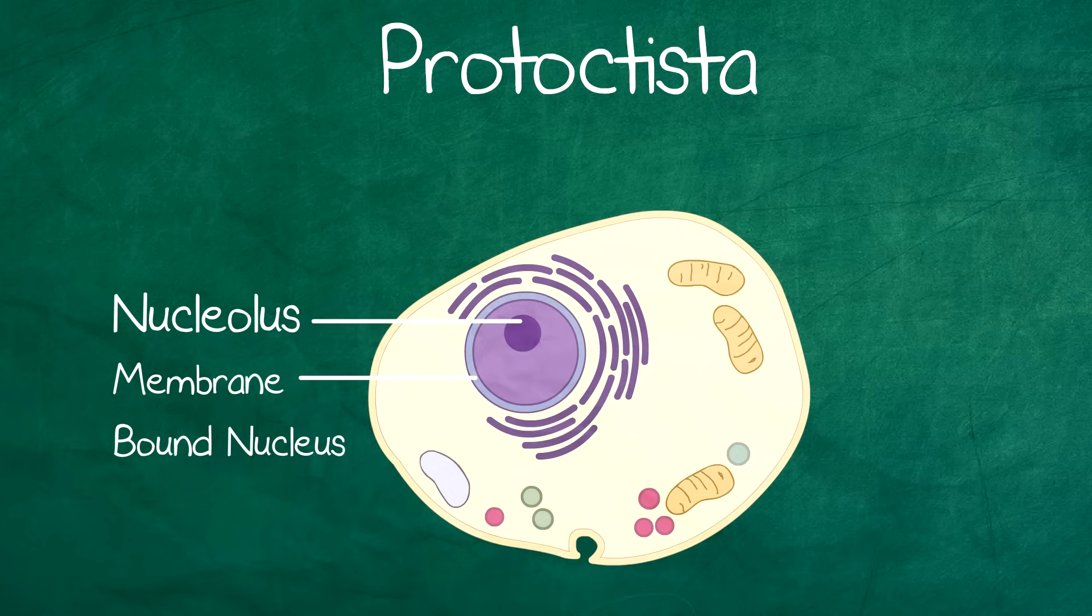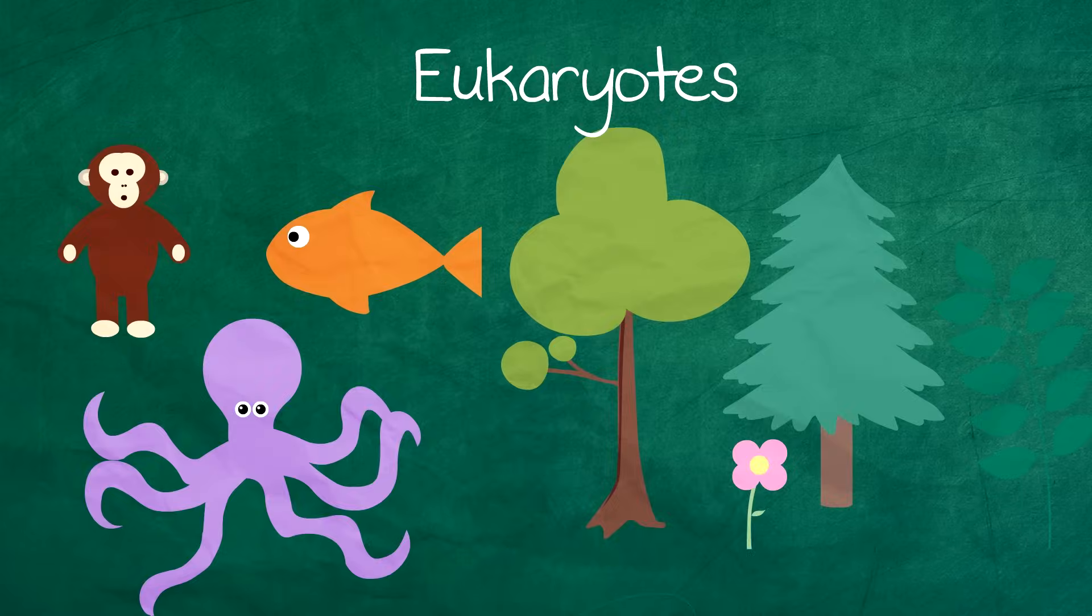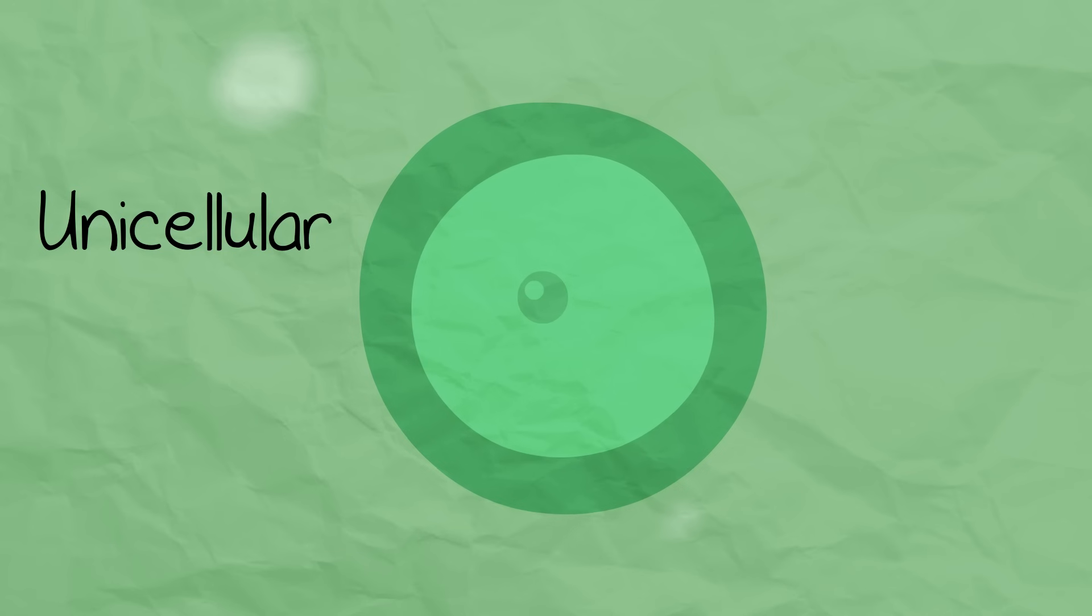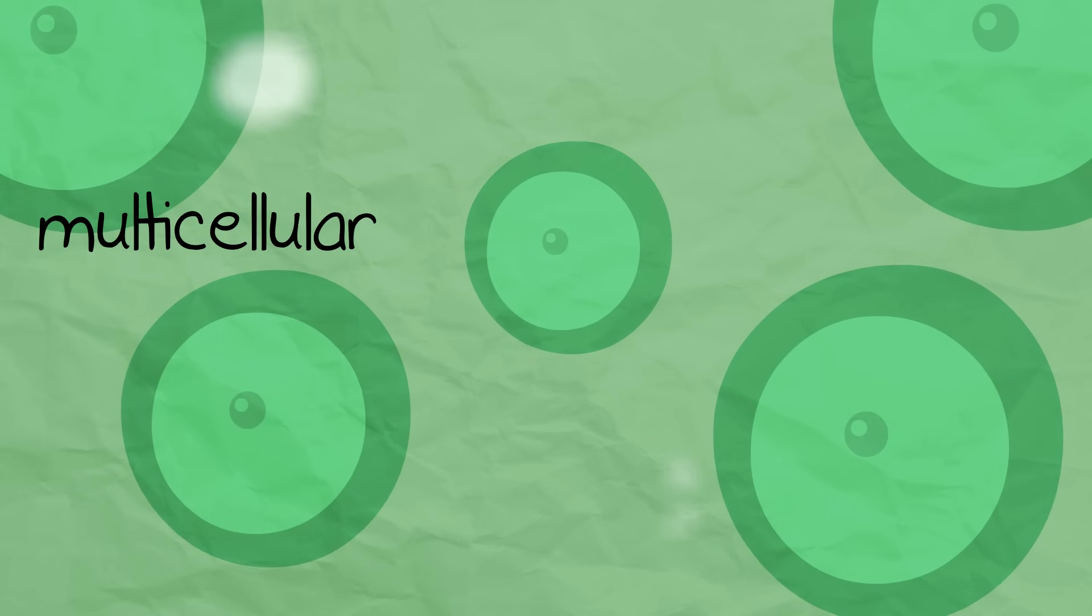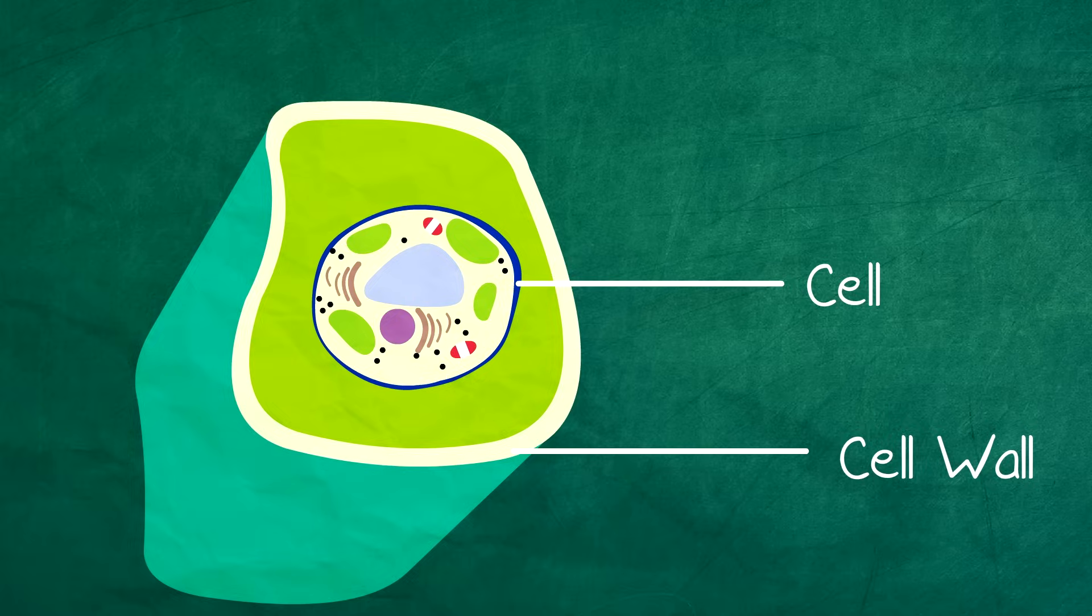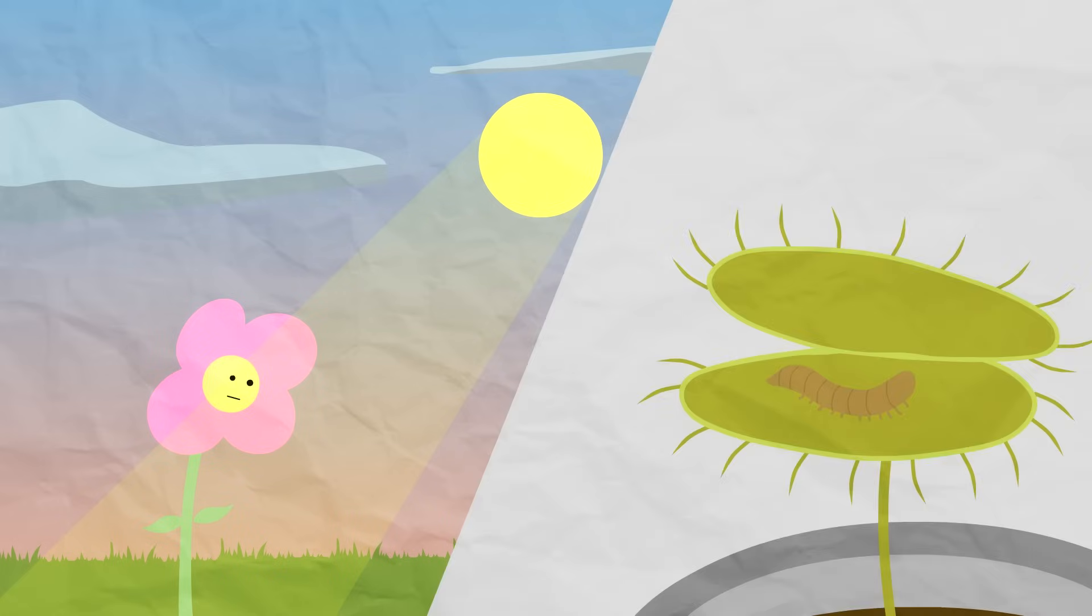The Protoctista kingdom are eukaryotes like animals and plants. They can be unicellular and multicellular like the fungi. They have cell walls, sometimes with polysaccharides. They are autotrophic and heterotrophic.